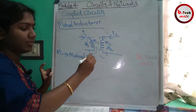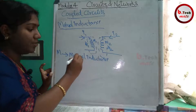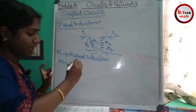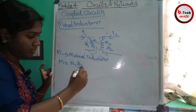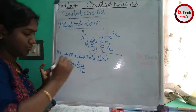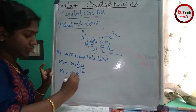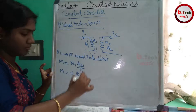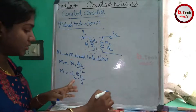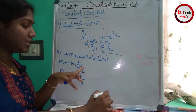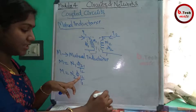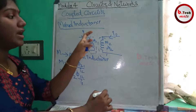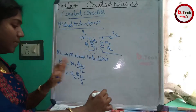Mutual inductance is represented by capital M. In the first condition, M equals n1 times φ21 divided by i2. In the second condition, M equals n2 times φ12 divided by i1. Here φ12 is the flux linkage of coil 2 due to coil 1, and φ21 is the flux linkage of coil 1 due to coil 2. i1 and i2 are the currents through coil 1 and coil 2 respectively.